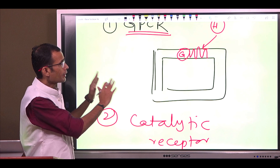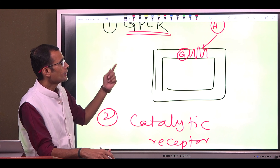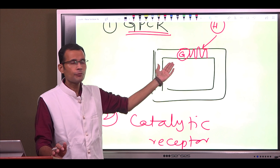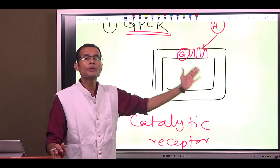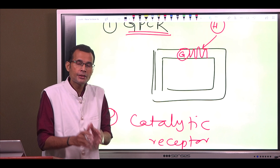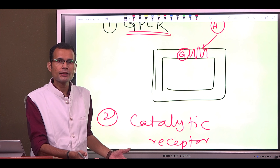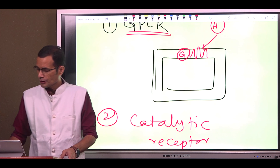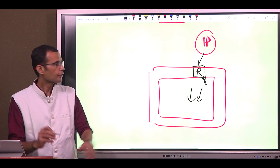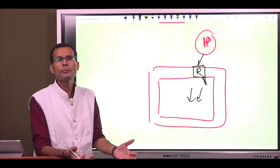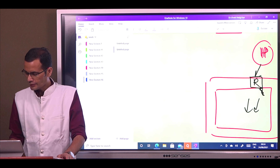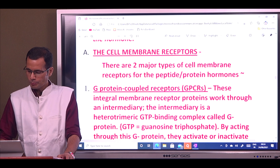The key difference: in a GPCR, the receptor has no activity by itself — it is associated with a G protein that activates enzymes to form the second messenger. In a catalytic receptor, the receptor has intrinsic enzymatic or catalytic activity, directly acting on intracellular proteins to exhibit the hormone effect.